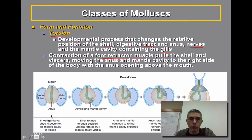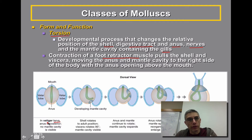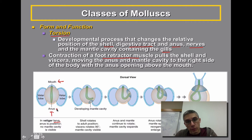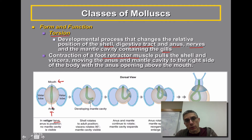One really important thing to understand with torsion is that it actually occurs during larval development. These larvae are specifically called veligers. The mouth is located in the anterior region of the larvae and the anus is located posteriorly, which is pretty standard in most animals — a mouth towards the front and the anus towards the back, a pretty straight-line track for food to follow.